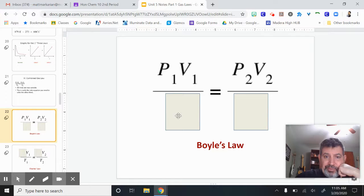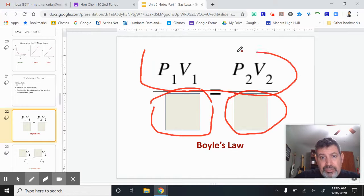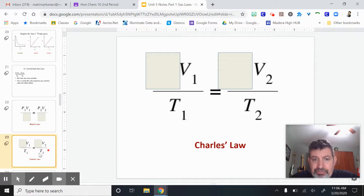If I cover up the bottom of the combined gas law, that's where the temperature would be. When we cover that up, notice which law we have - it's Boyle's law. So Boyle's law is just the top of the combined gas law. If I go to the next slide, notice I've covered up the pressure. When you cover up the pressure on the combined gas law, you get Charles's law. So you really only have to memorize one equation for this.